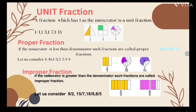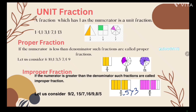Now coming to improper fraction. What is an improper fraction? If the numerator is greater than the denominator, such fractions are called improper fractions. For example: five upon three — the denominator three is smaller than the numerator five. Also eight upon five, nine upon two, fifteen upon seven, and sixteen upon nine. I hope you understood unit fraction, proper fraction, and improper fraction.